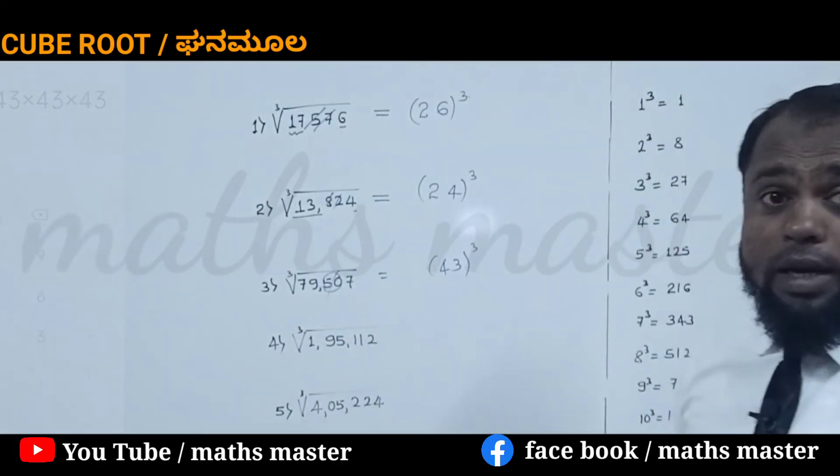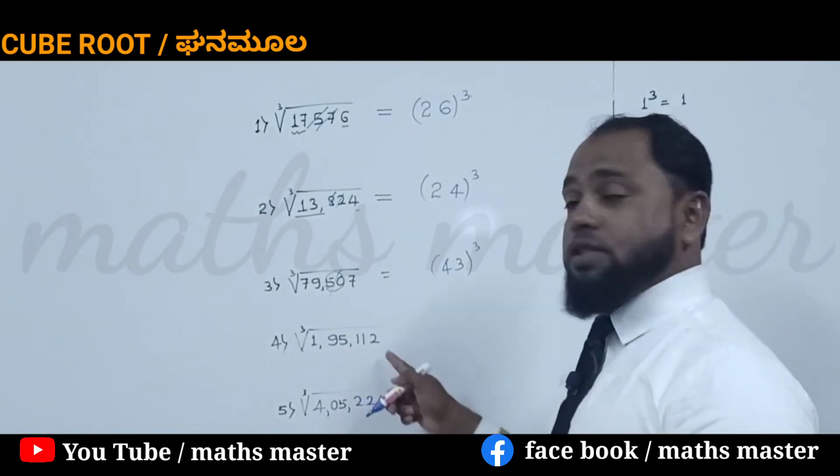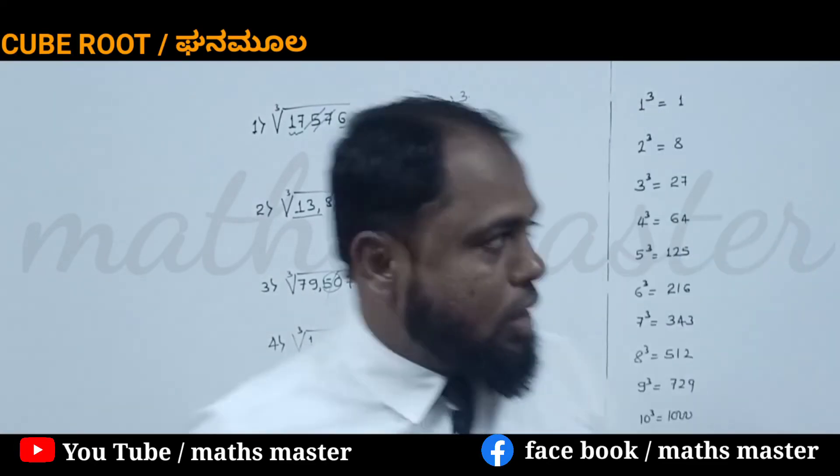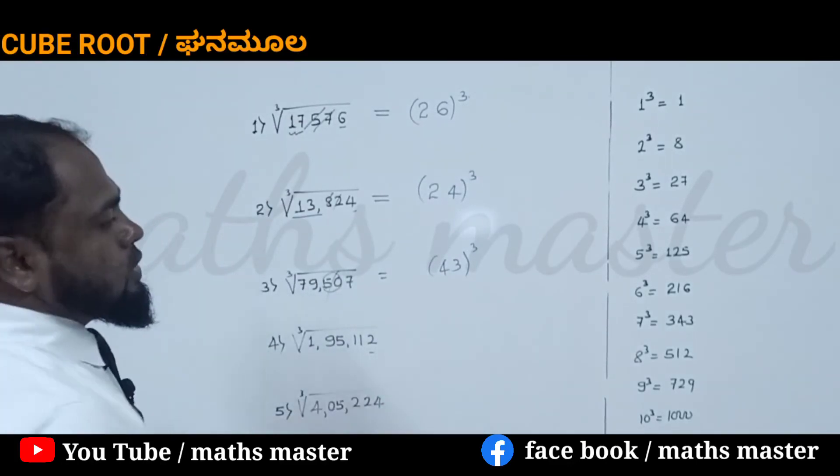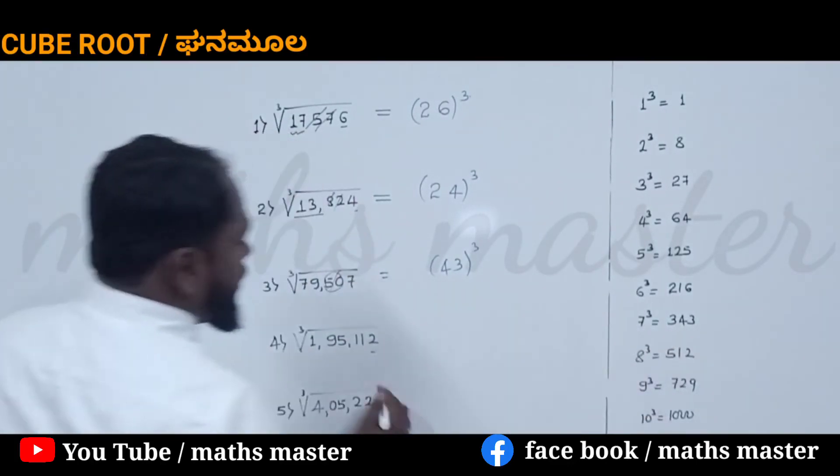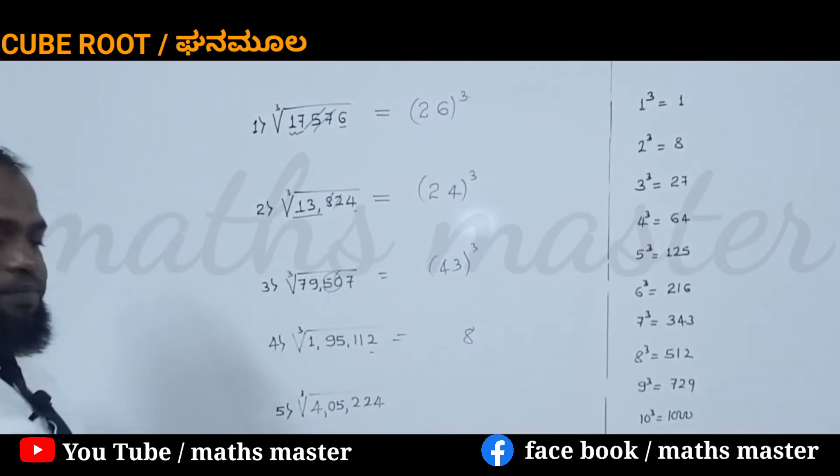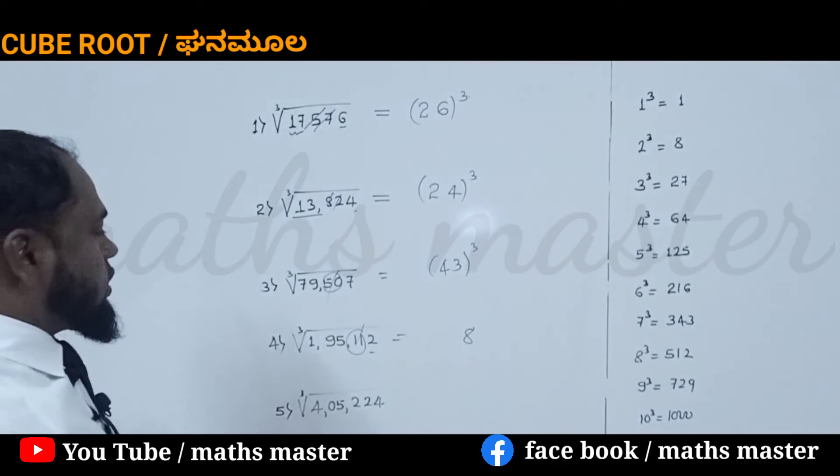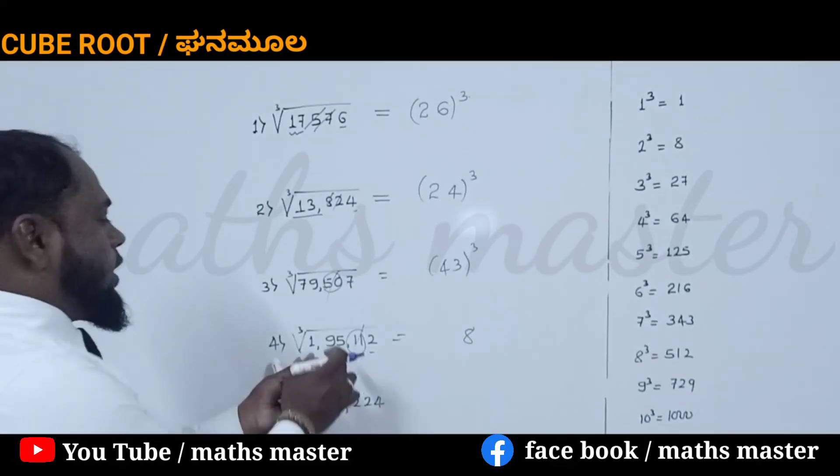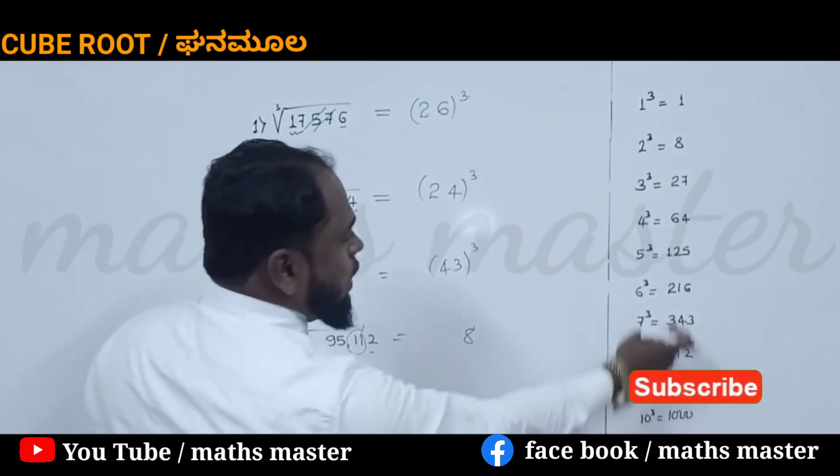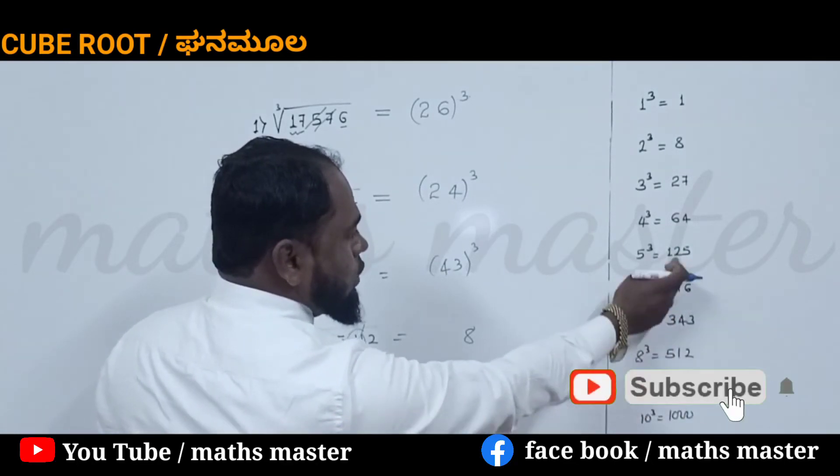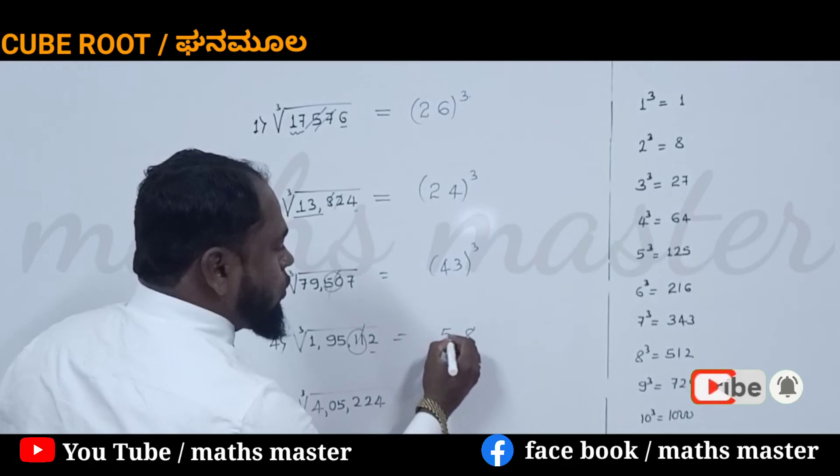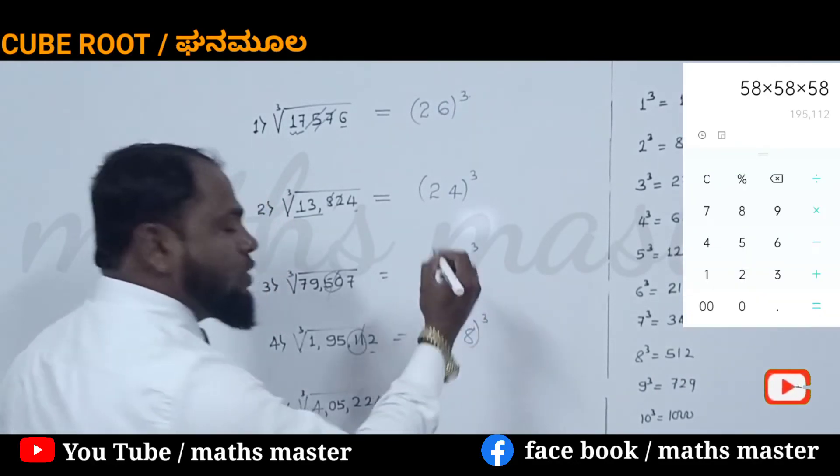Now come to one more big number: 1,95,112. Same procedure. 2 is in unit place, so 8 should come in its unit place. Leave the two digits. The remaining number is 195. The nearest cube to 195 is 125, which is 5 cubed. So it is a cube of 58.